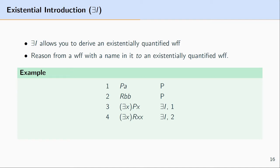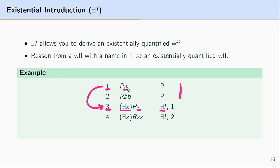Let's look at two examples. In the first example, we start with two formulas: PA and RB. Line three is the result of applying existential introduction to line one — we reason from PA to ∃xPx, taking the name A and replacing it with a variable and adding an existential quantifier for that variable; we reason from, say, 'Alfred is a person' to 'someone is a person.' At line two we have RBB, and line four is the result of applying existential introduction to line two, replacing each B with existentially quantified variables.